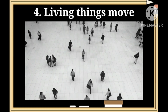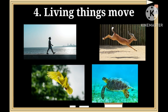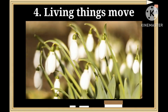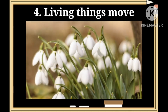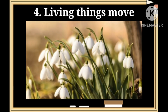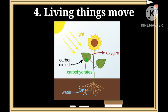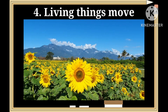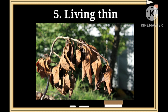Number four: living things move. All living things show some sort of movement, such as walking, jumping, flying, or swimming. Plants usually do not move from one place to another but can move their parts. For example, they move their shoots upward for sunlight and roots downward to obtain water and mineral nutrients from soil.